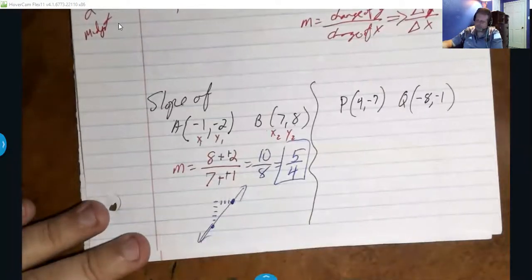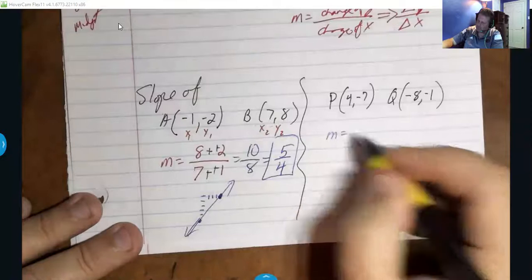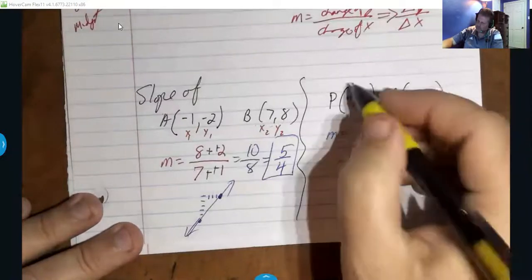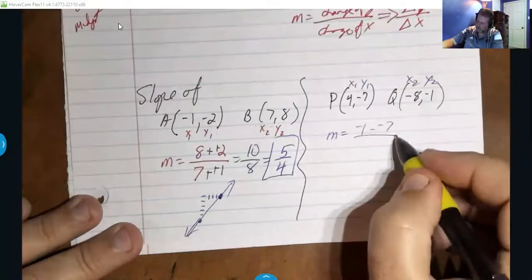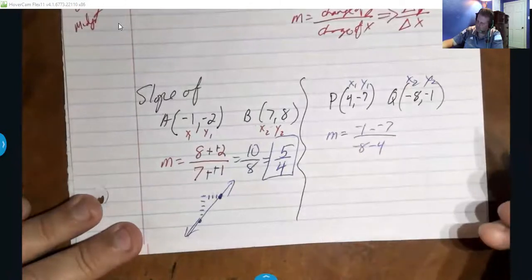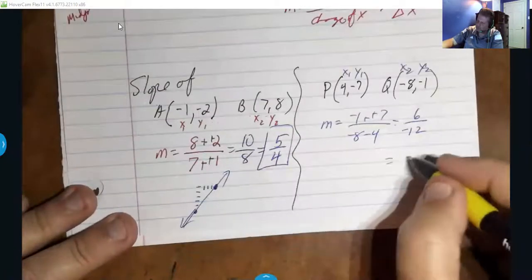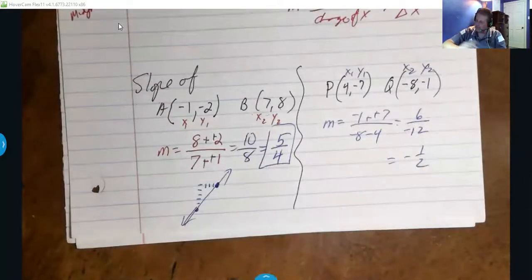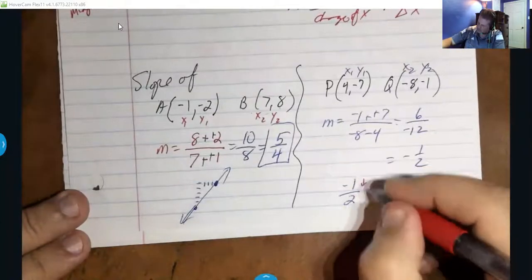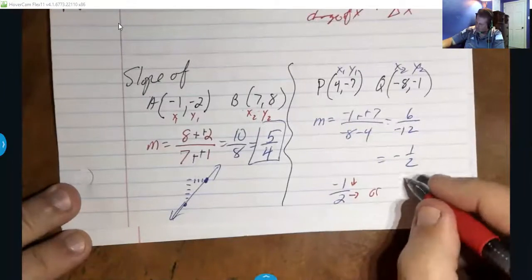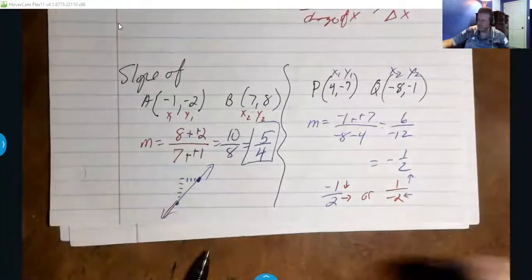Let's do one more. Taking the change of y over the change of x: negative 1 minus a negative 7, over 8 minus 4, which gives 6 over negative 12 — a slope of negative one half. That negative can be negative 1 over 2, which is down 1 to the right 2, or 1 over negative 2, which is up 1 to the left 2. Either way you get to the same spot.